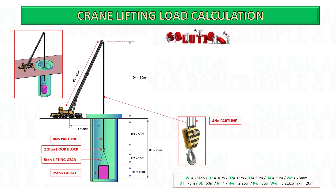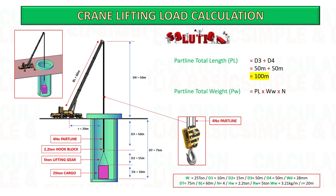Based on the given formula, start to substitute the data and do the calculation. First, calculate the total height of the crane wire rope by adding the distance of the crane boom tip from the ground and the height of the crane wire rope under the ground. Next, after getting the total height, calculate the weight of the rope by multiplying the wire weight, the total height, and the number of part lines.